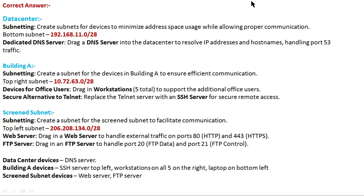The correct answer for the Data Center section: for subnetting, create a subnet for devices to minimize address space while allowing proper communications. The correct subnet IP is 192.168.11.0/28. For the dedicated DNS server, drag a DNS server into the Data Center to resolve IP addresses and host names, handling port 53 traffic.